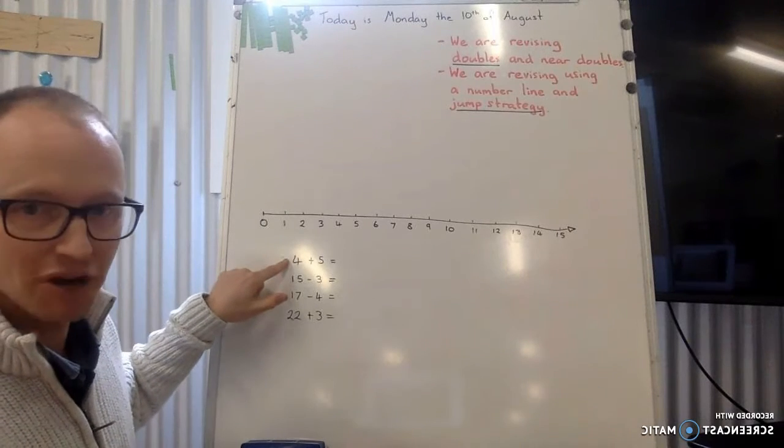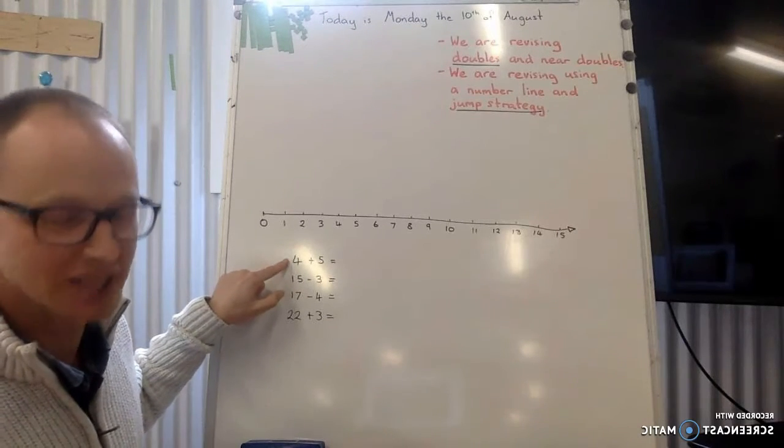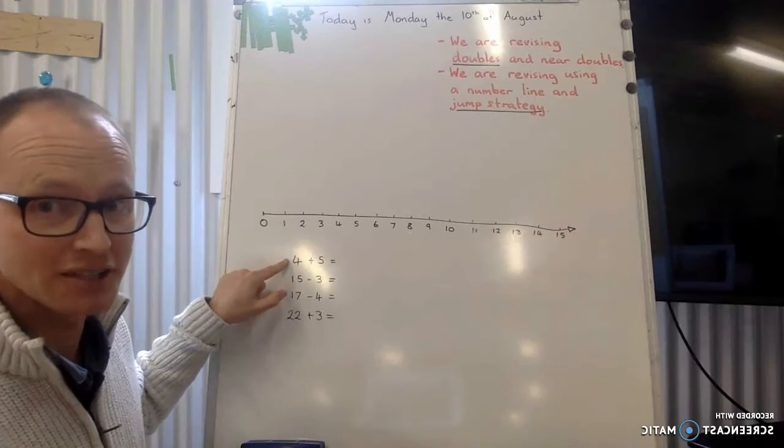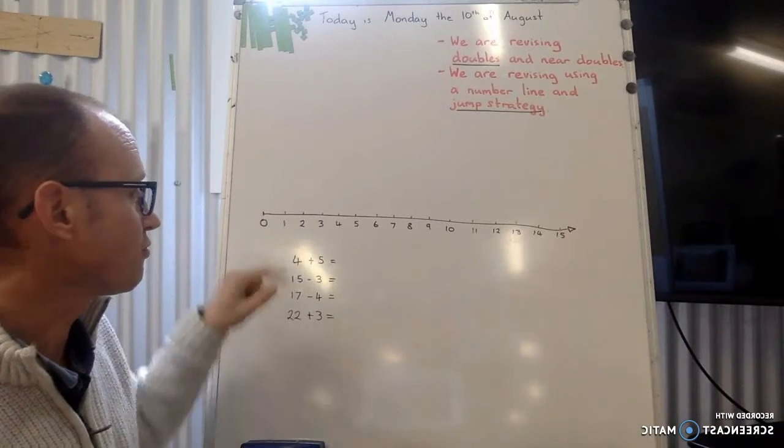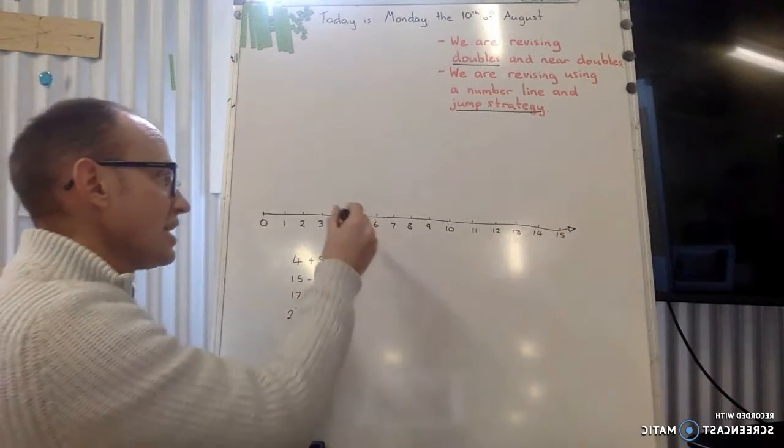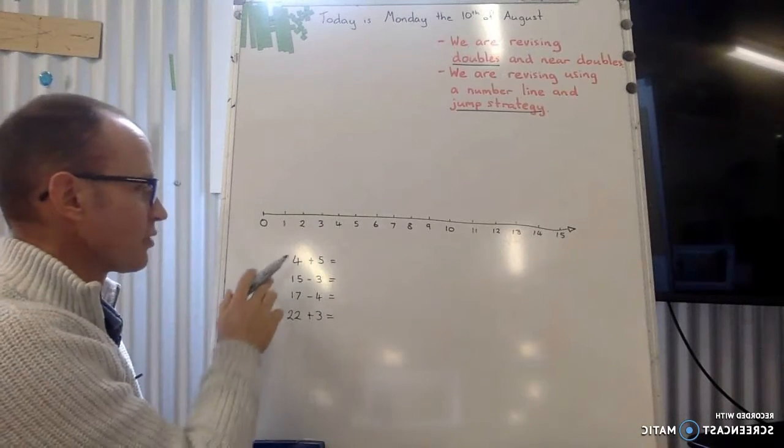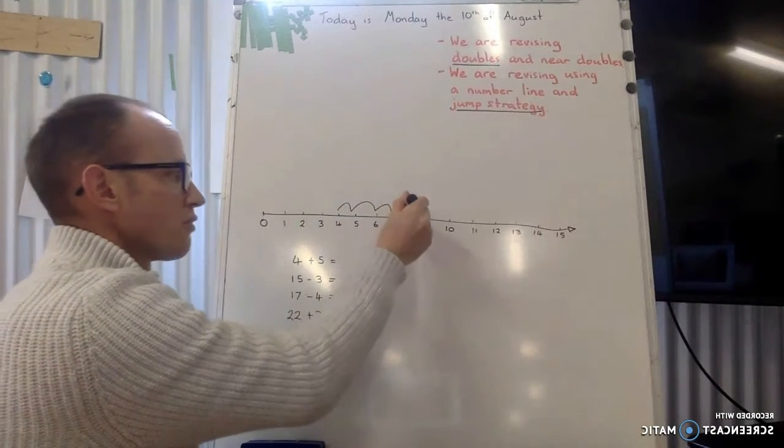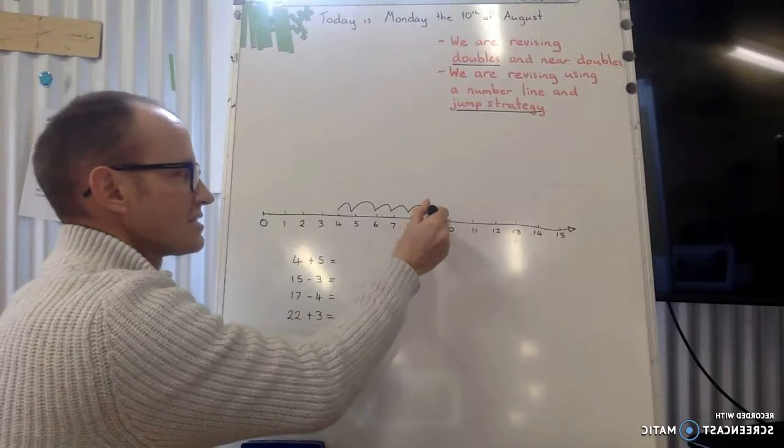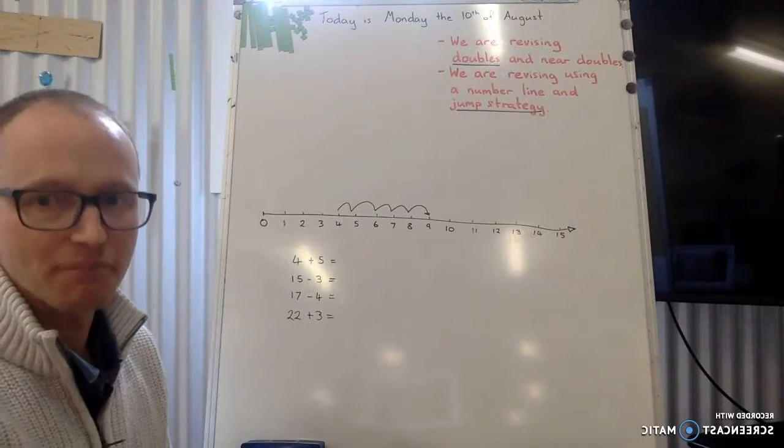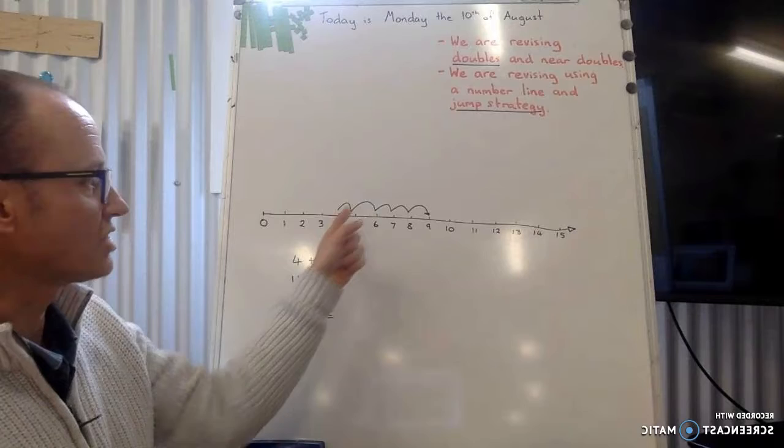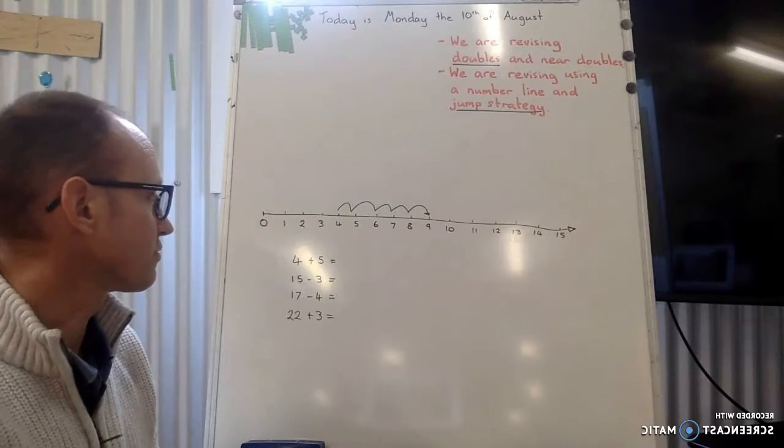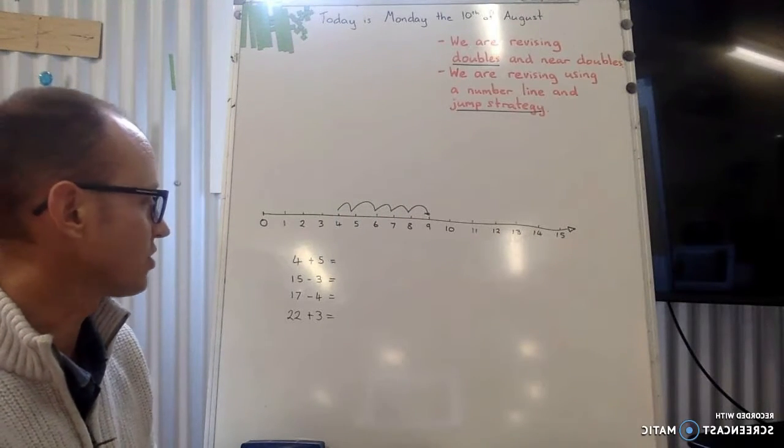So 4 plus 5. The answer is 9, I know. But I want you to pause on knowing the answer for a bit and just check the strategy. So 4 plus 5. We start at the 4 and then we go plus 5. So we go 1, 2, 3, 4, 5. And the answer is 9. We already knew that, but we're using the strategy of jumping on to show us how it's working. So 4 plus 5 equals 9.